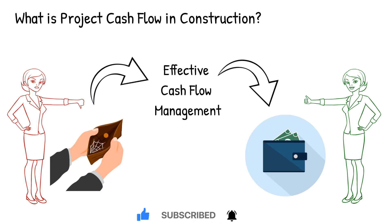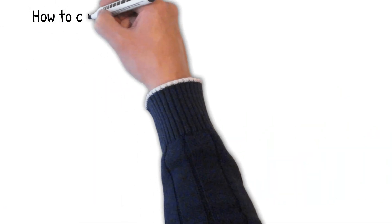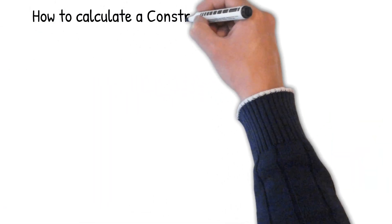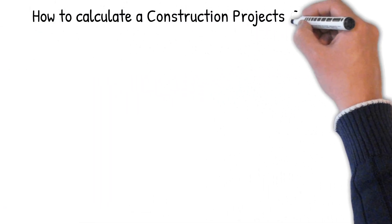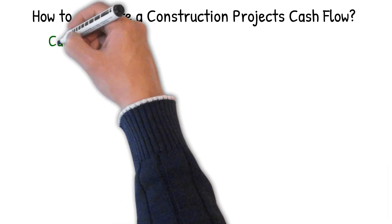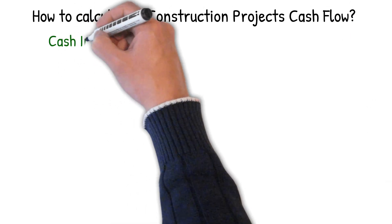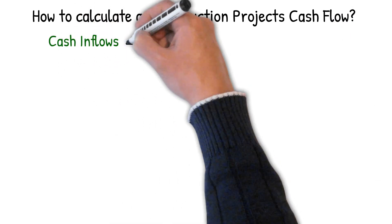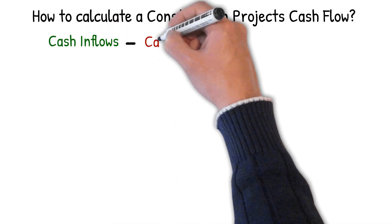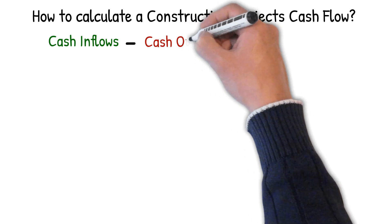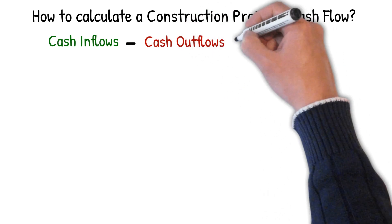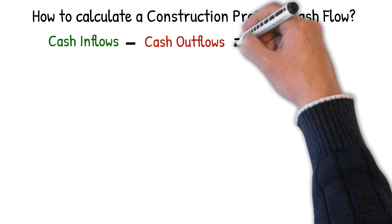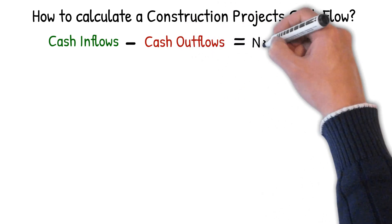In its simplest form, cash flow on a project is calculated by subtracting cash outflows from cash inflows. You can think of cash inflows as sources of cash and cash outflows as uses of cash or expenses.